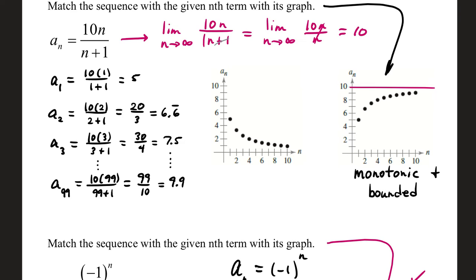Also in class, what we did is we picked a really large number like 99, subbed it in, 10 times 99 over 99 plus 1. That reduced to 99 over 10, which is 9.9. So no matter how large you make this n value, the most you can get at the end is 10. And so you'll approach 10.